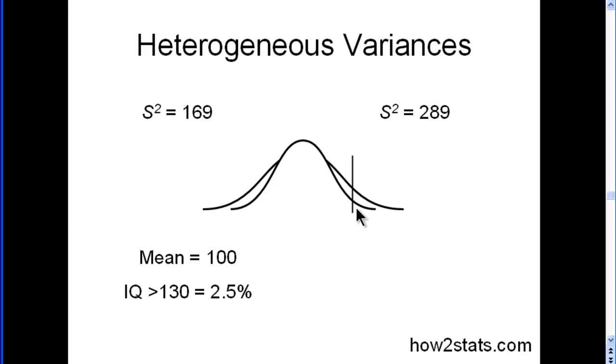But in the smaller variance distribution, the IQ 130 and above corresponds to only 2.5% of the sample. But for the other distribution with a variance of 289, we can see that 7.5% of the sample has an IQ greater than 130.